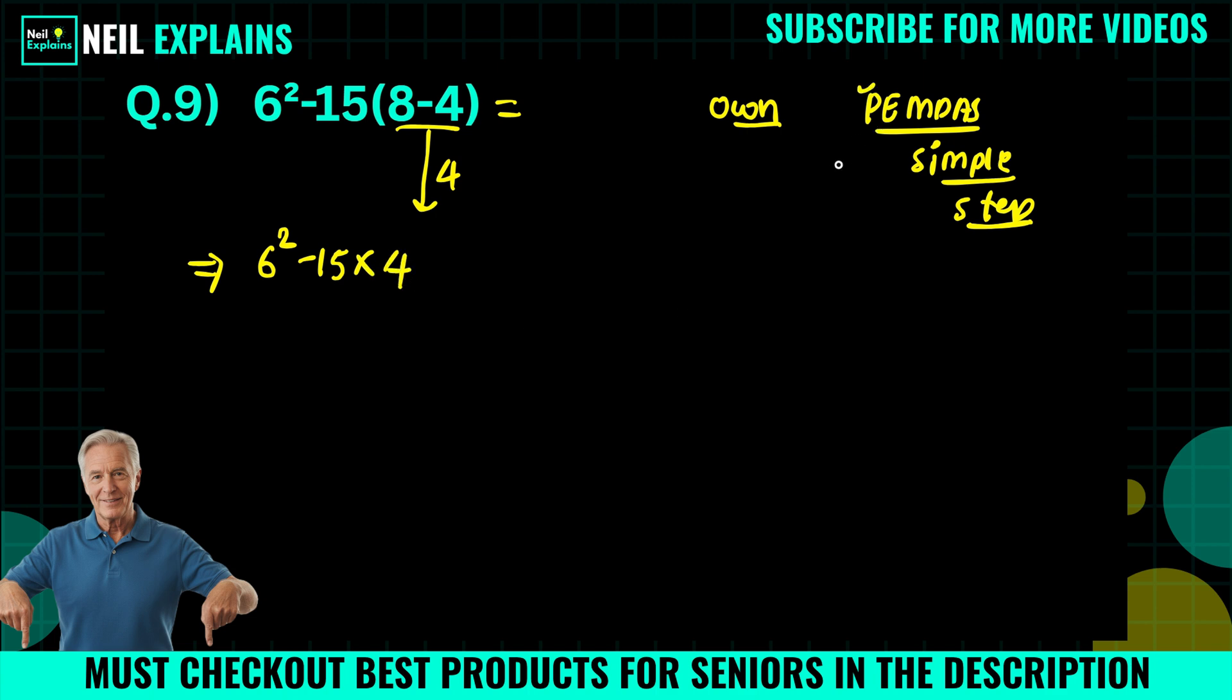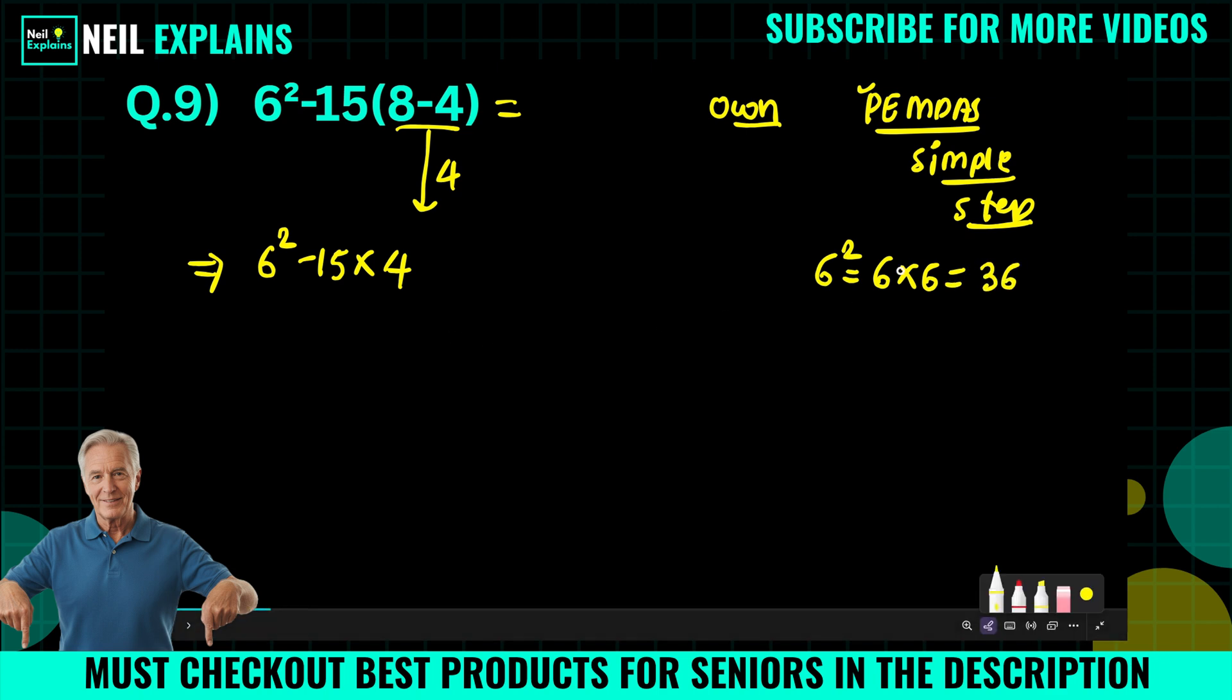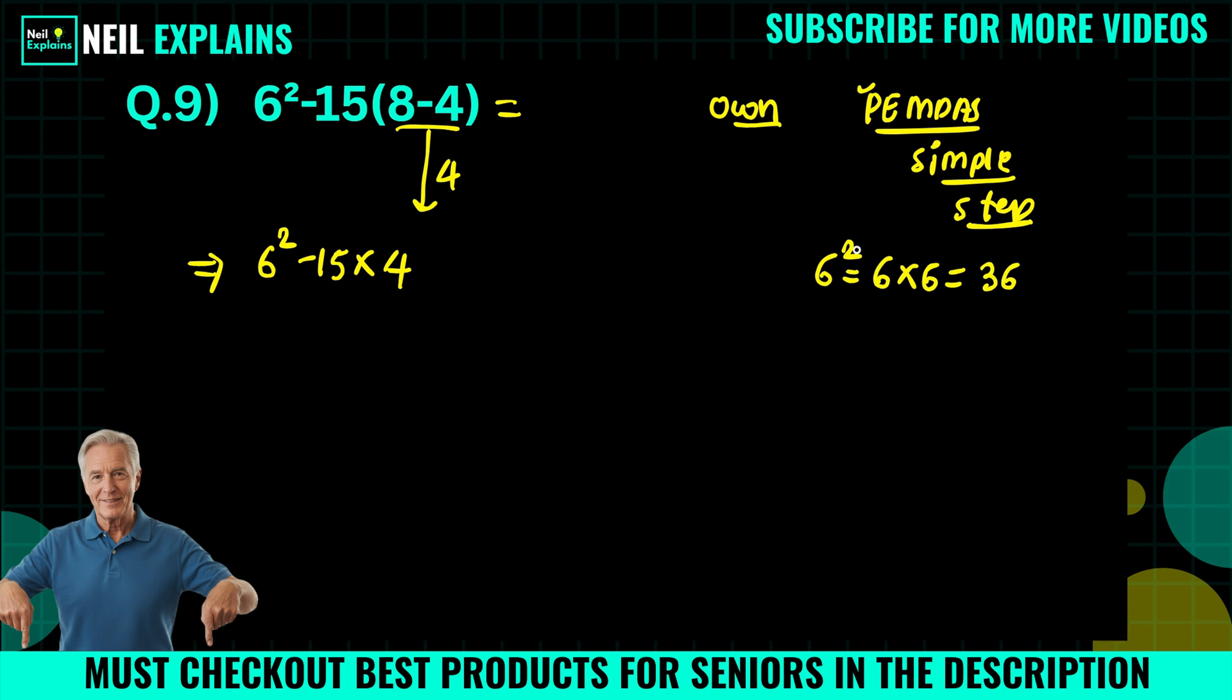Now parenthesis is done. Next preference will be given to exponent. So here the exponent part is 6². 6² is nothing but 6×6, which equals 36. So we can write 36 in the place of 6².